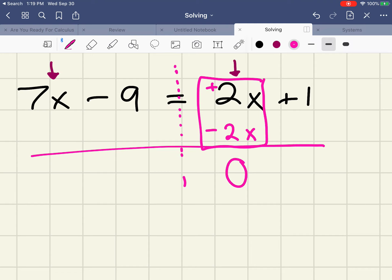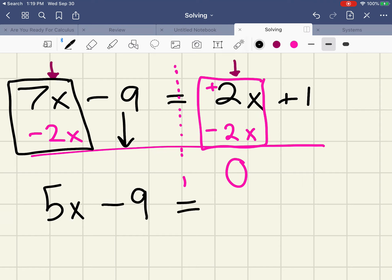If I have an equation, I need to make sure that I subtract 2x from this side of the equation as well. When I do that, I'm looking at these as like terms. I have 7x minus 2x, that is 5x. I drop down my minus 9, drop down my equation. The 2x and the minus 2x cancel to be 0, and I drop down my 1.